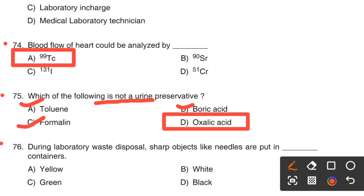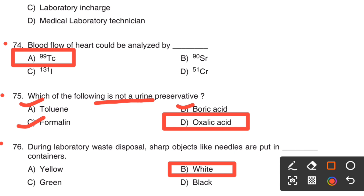Next question. During laboratory waste disposal, sharp objects like needles are put in dash containers. Option A, Yellow. Option B, White. Option C, Green. Option D, Black. The right answer is Option B, White. Sharp objects like needles have to be disposed of in white color containers.